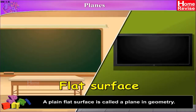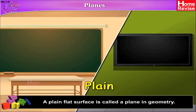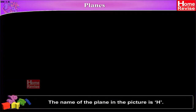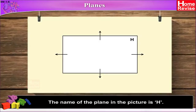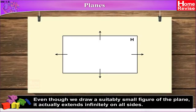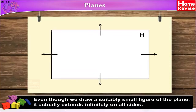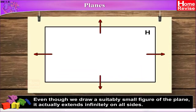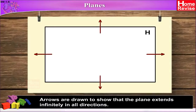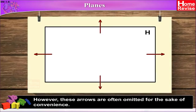A plane flat surface is called a plane in geometry. The name of the plane in the picture is H. Even though we draw a suitably small figure of the plane, it actually extends infinitely on all sides. Arrows are drawn to show that the plane extends infinitely in all directions. However, these arrows are often omitted for the sake of convenience.